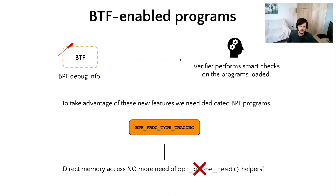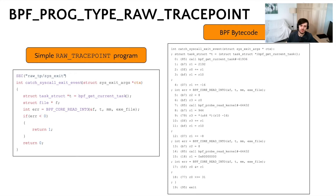Now let's go to the next feature. Here we talk about BPF Type Format, also called BTF — the debug information for BPF. The cool thing about this new type format is that the verifier can use it to perform smart checks on loaded programs, allowing us to write simpler and more efficient code. Not all programs can take advantage of this format, so the BPF tracing ecosystem introduced a new program type called BPF prog type tracing. These programs can directly read kernel/user memory without helpers. Let's see what this means with a concrete example. Let's start considering the trace point used in the old probe, the BPF prog type raw trace point. In this simple program, we need to access the file struct pointer from the current task, and since we cannot take advantage of BTF, we have to use the standard BPF core read into macro. Looking at the bytecode, we can see that we have 19 instructions for just 5 lines of code.